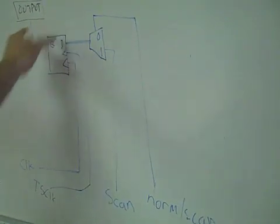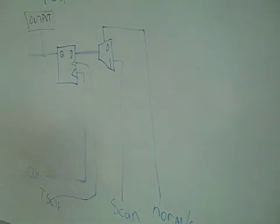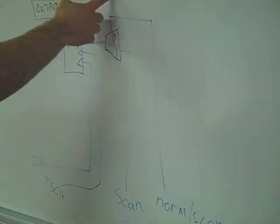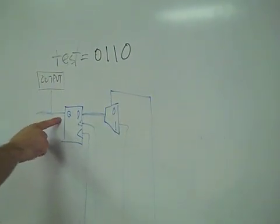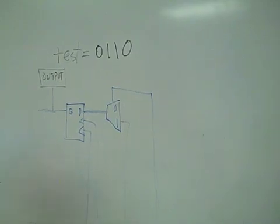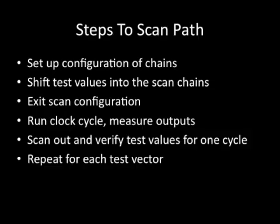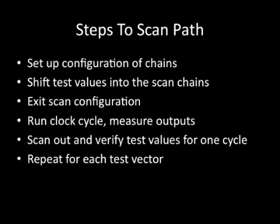If the output does not match the input, then you know you have a bad connection on that wire. As you can see, we have a test vector — you feed in each bit and test to see that the output of the flip-flop matches the input, verifying or disproving the design. The steps to a scan path are: set up configuration of chains using flip-flops and MUXs, shift the test values into the scan chains, exit the scan configuration, run a clock cycle so the flip-flops can store the value, then measure the outputs, scan out and verify the test values for another clock cycle, and repeat for each test vector.